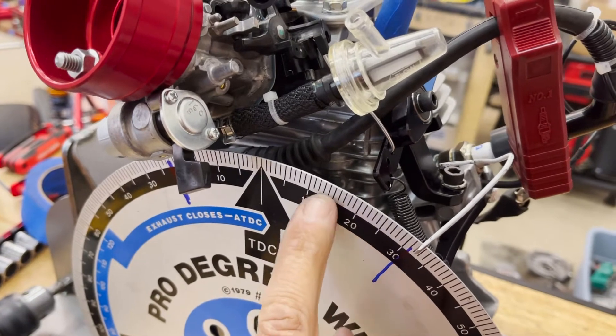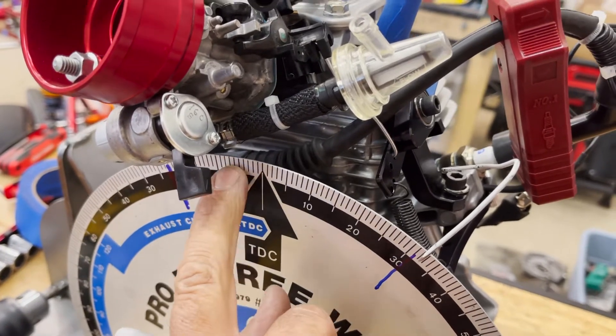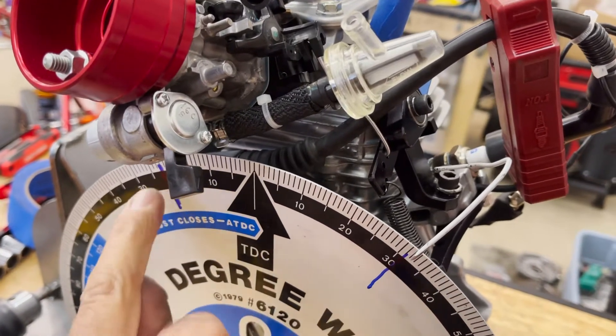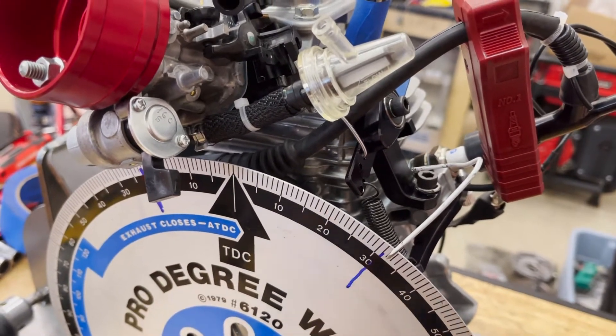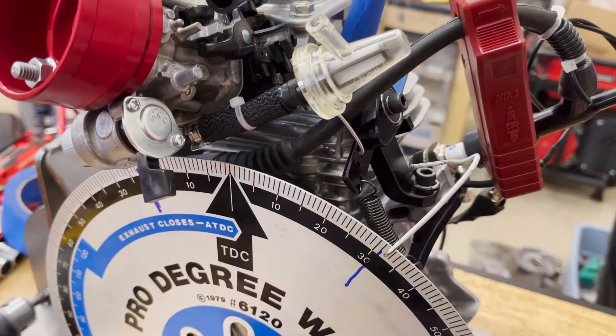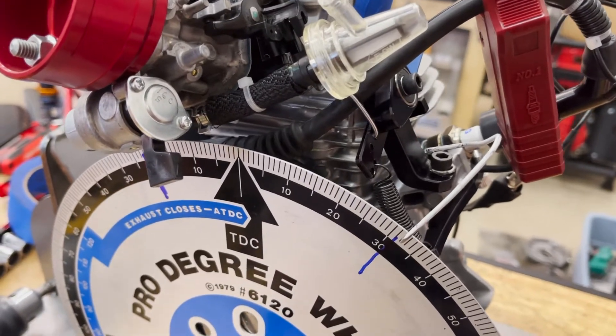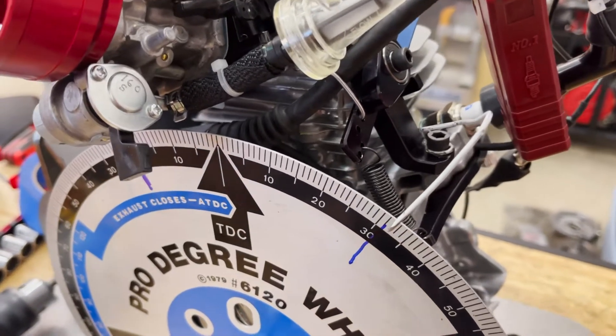5, 10, 15, 20, 25, 30, 35, 40, 45, 50, plus 2, plus your 1. That's 53. So, half of 53 is 26 and a half.